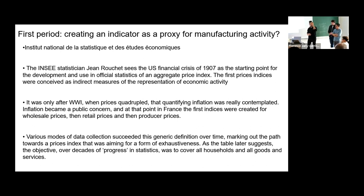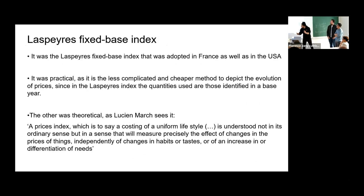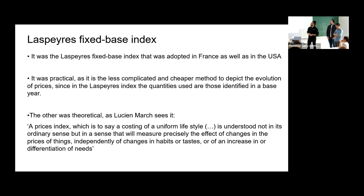The first indices were created for wholesale prices, later retail prices, and then producer prices. Various modes of data collection succeeded this generic definition over time, marking a path towards a price index aiming for exhaustiveness. From the first generation all the way to the now ninth generation, they include more and more things. The fixed-base index was adopted in France and in the US as the less complicated and cheaper method to depict the evolution of prices.